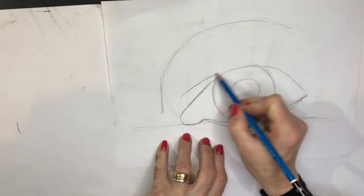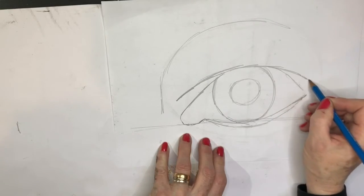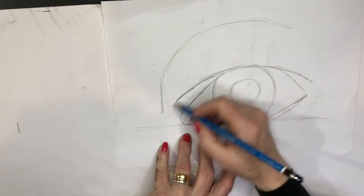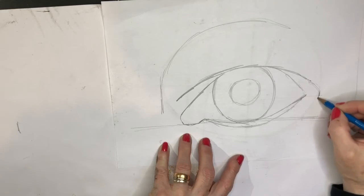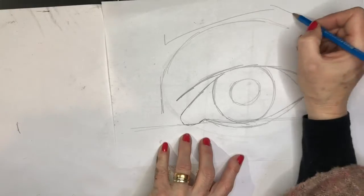I have a crease that goes along here. Depending on how old you are depends on what's going on. I've got a little bit of extra skin here, saggy eyelids, what a shame.